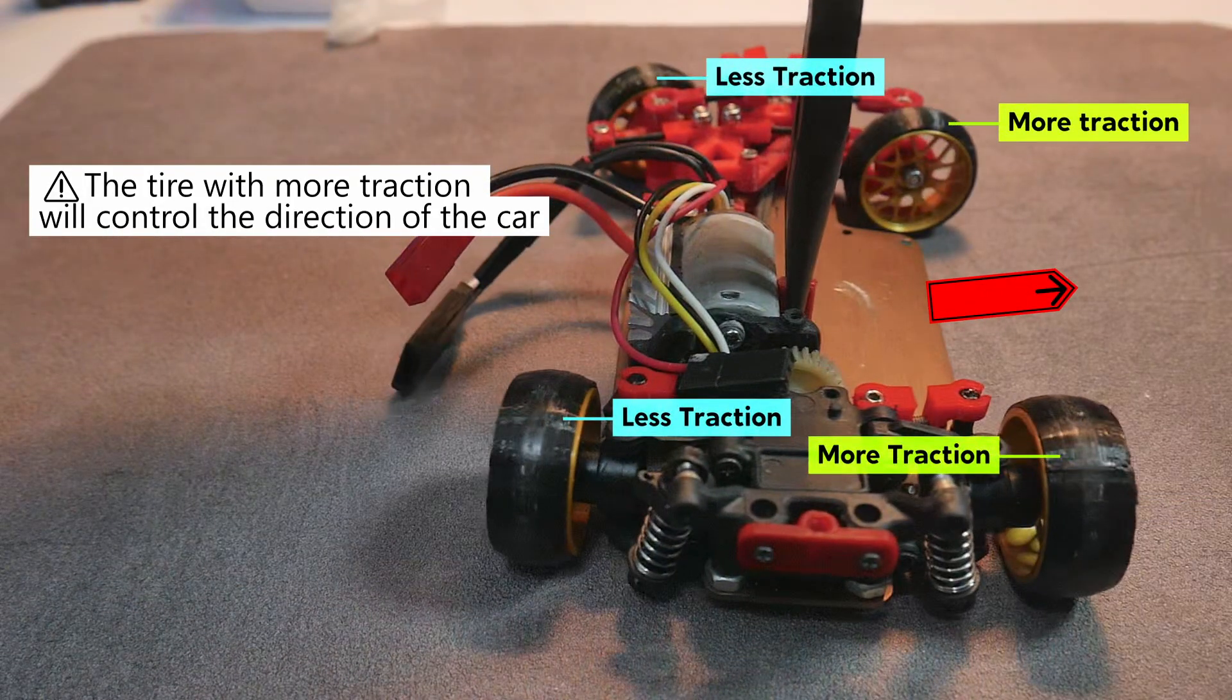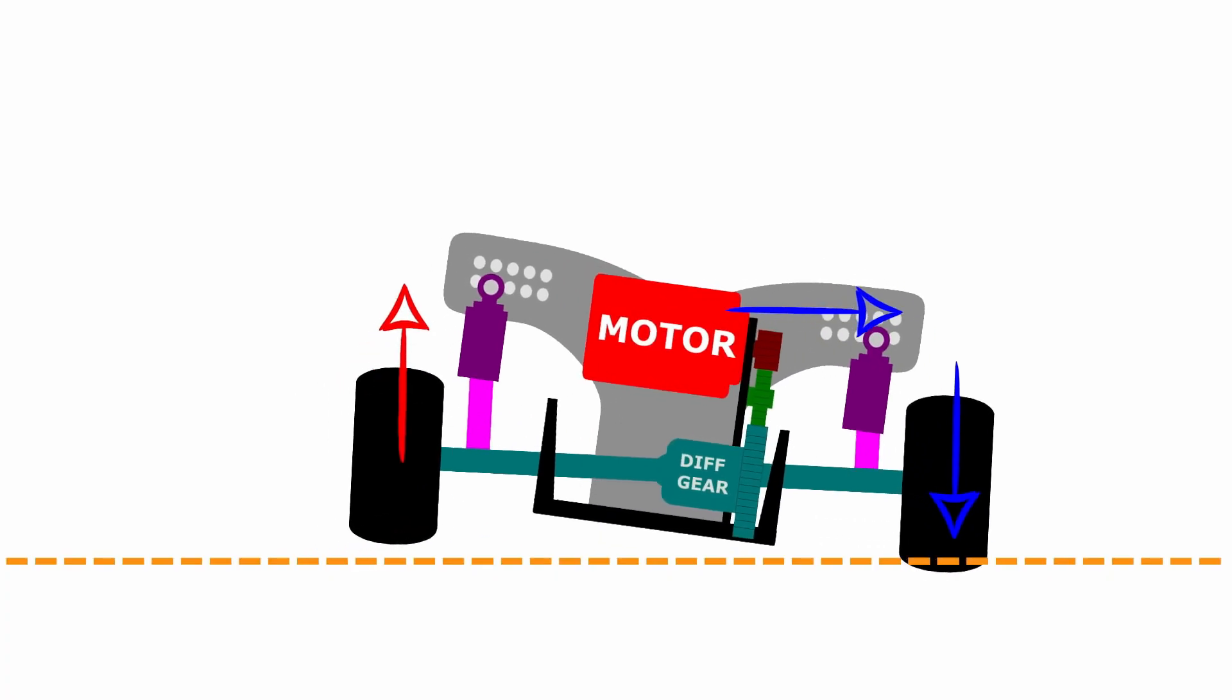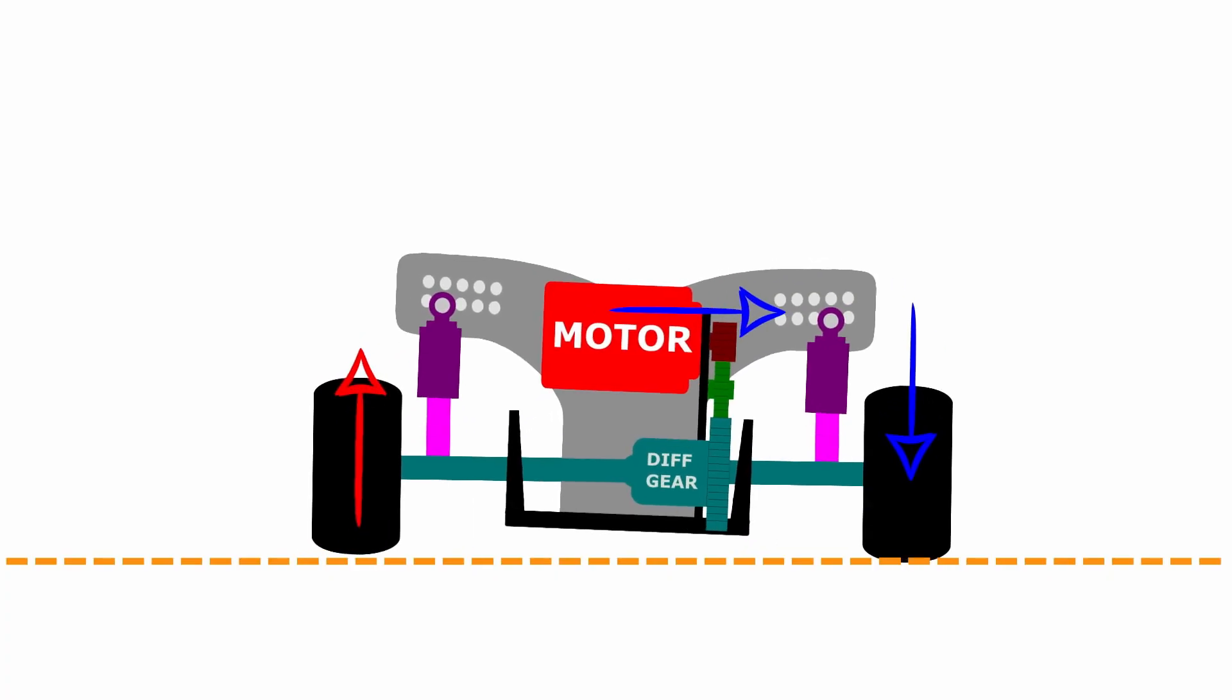Especially on RC cars with a high center of gravity, for example RCs with a motor mounted on top, the traction difference between the inner and outer wheel becomes even greater.